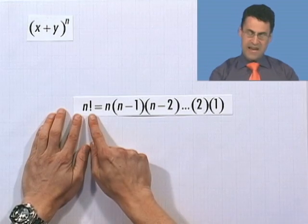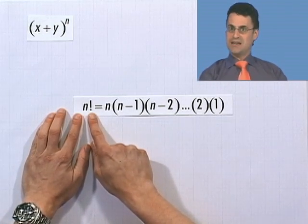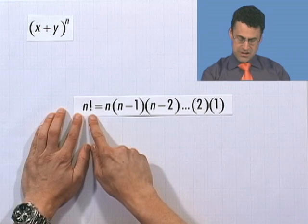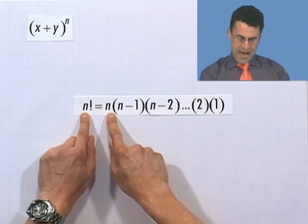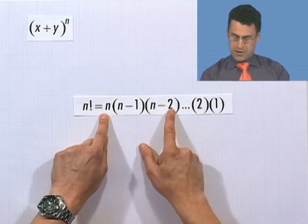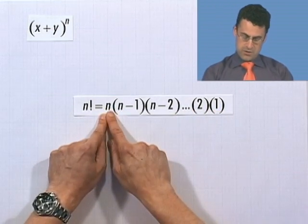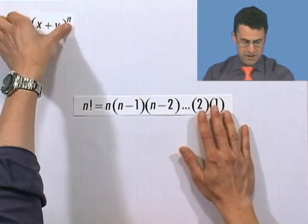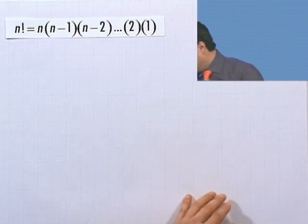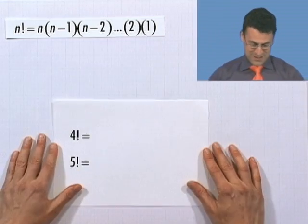Let me show you how binomial coefficients work — these are great, and very important in advanced mathematics. First I want to begin with n factorial. That exclamation mark wants you to get really excited: n factorial! The definition is you take that natural number and keep multiplying it by its predecessors all the way down to 1. It's the product of all natural numbers from 1 to n.